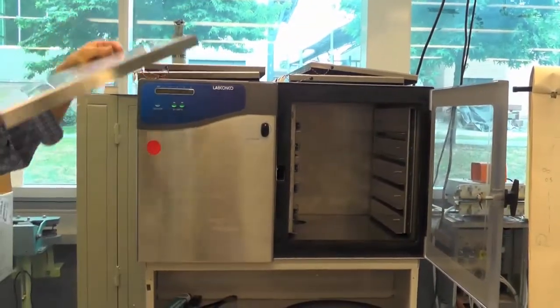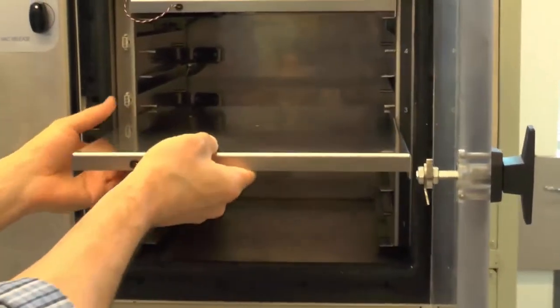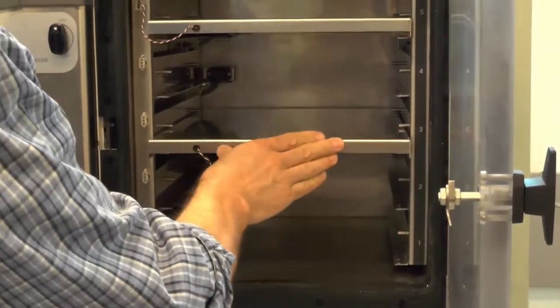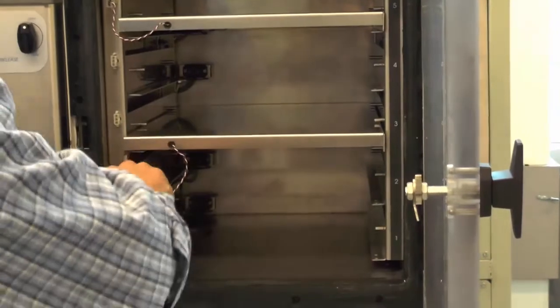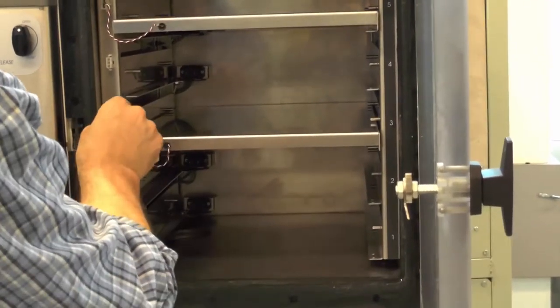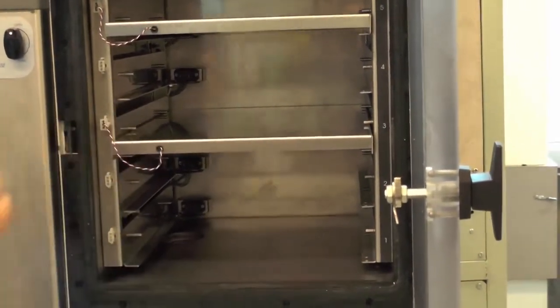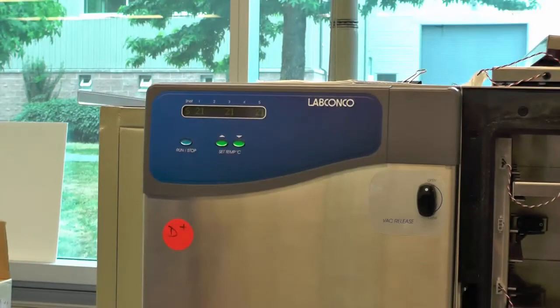While the collector is cooling down, we can insert the sample holding trays. To insert a tray, first slide it into one of the shelves and push it all the way to the back. Then attach the thermocouple on the tray to the machine. Once attached, the indicator display will show which shelf the tray is placed in and what temperature the tray is currently at.